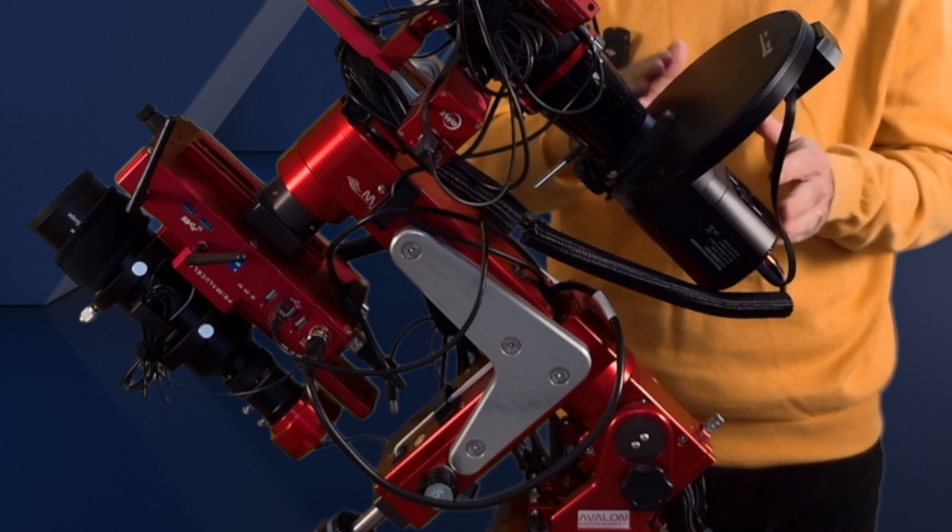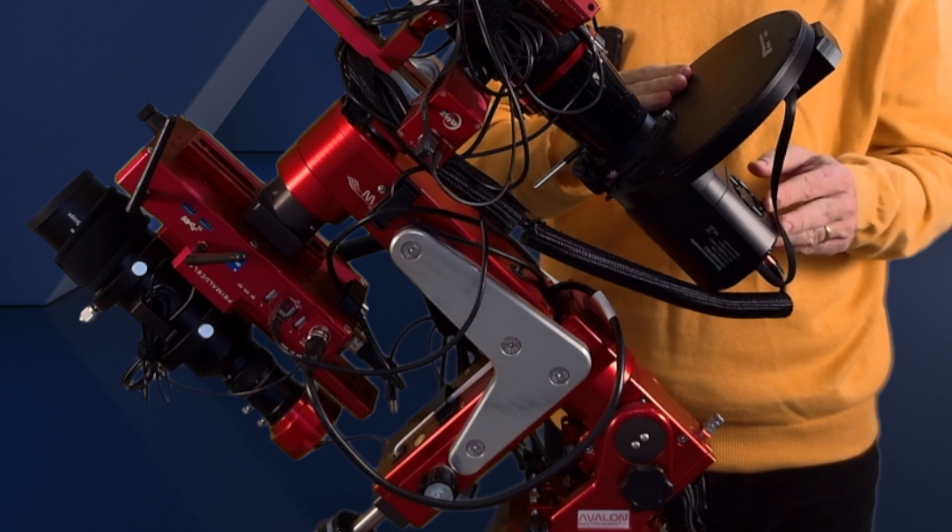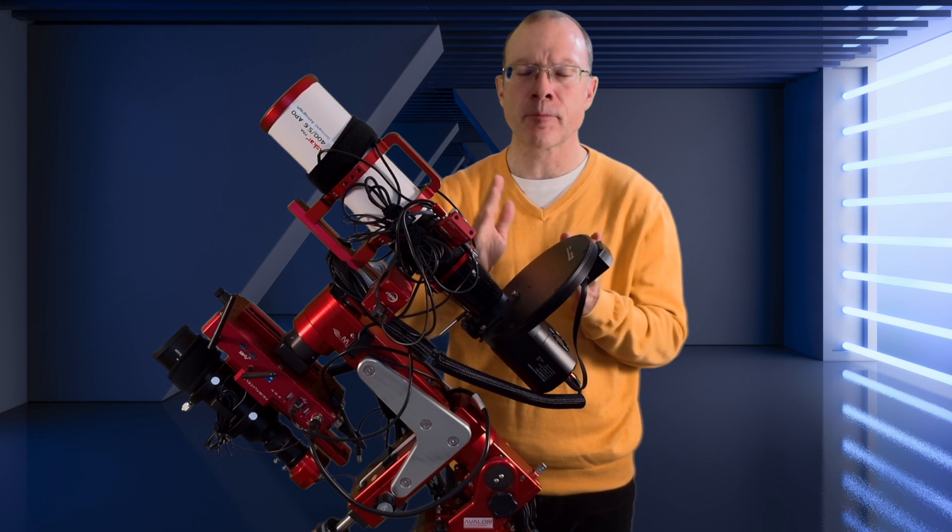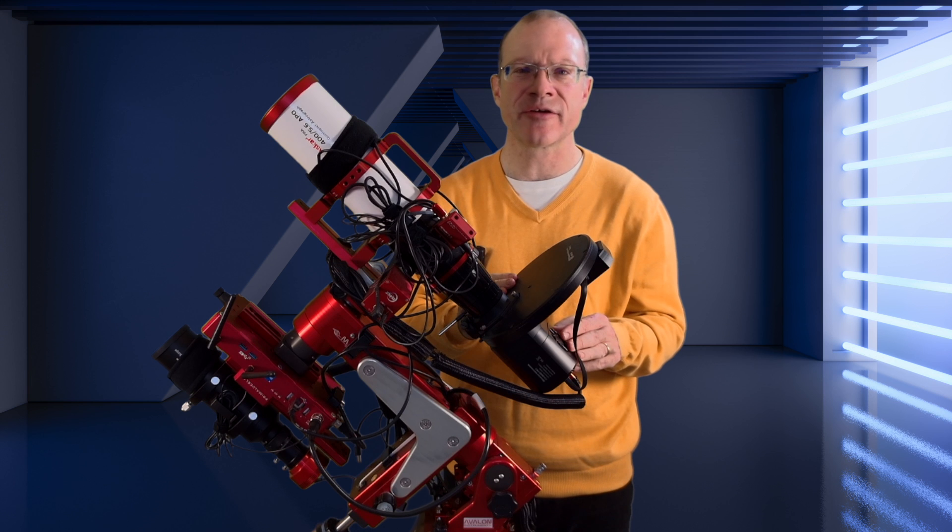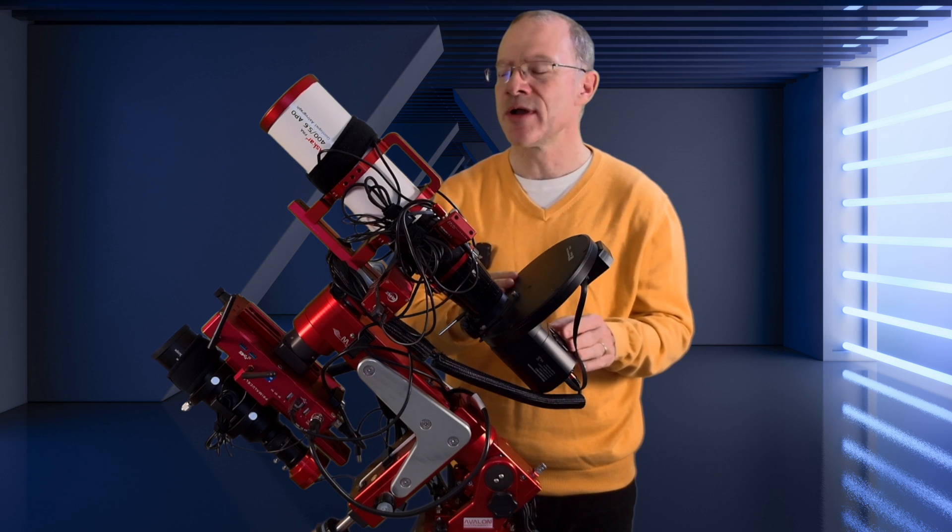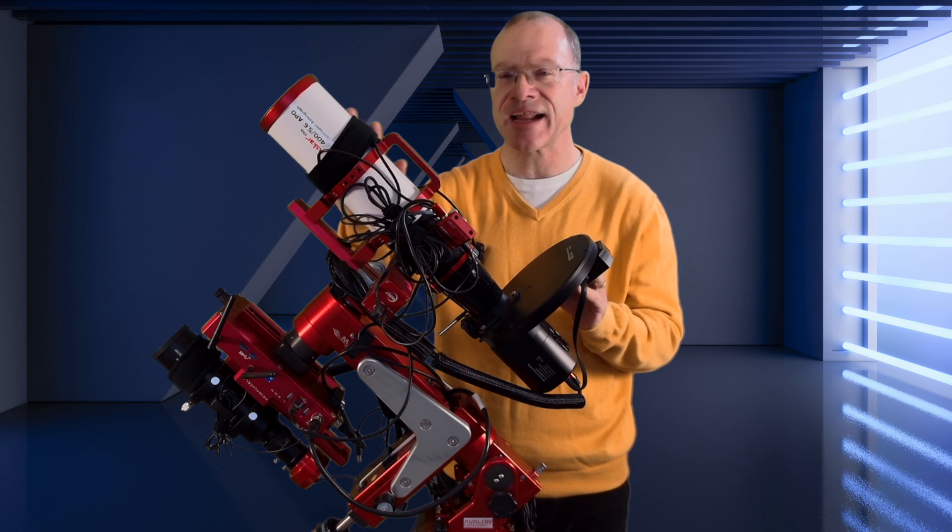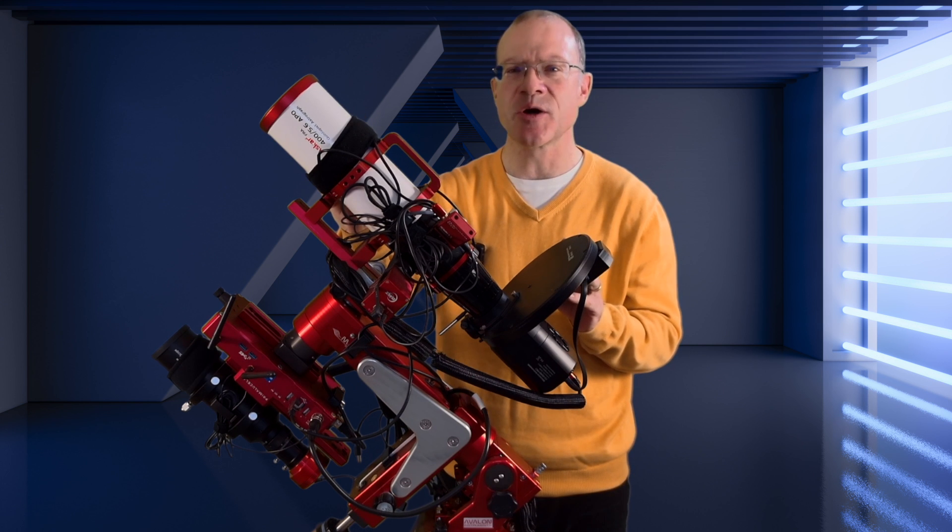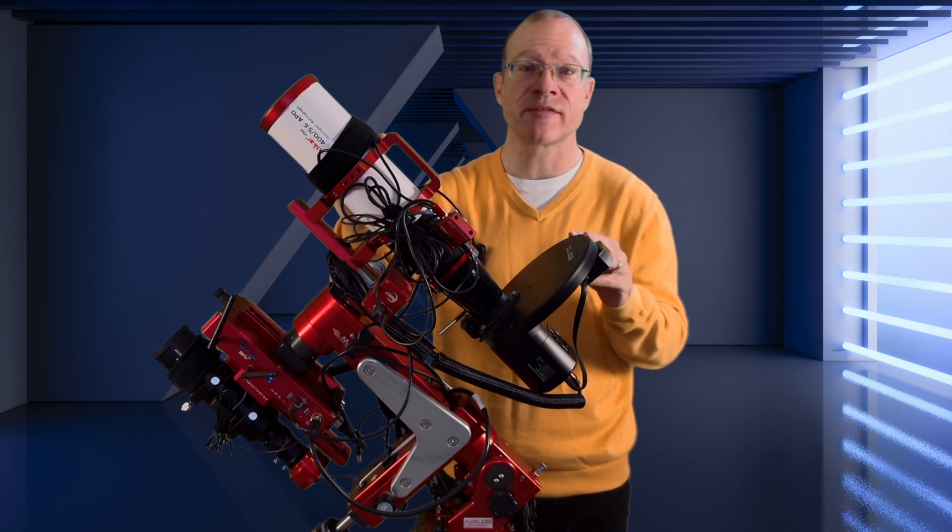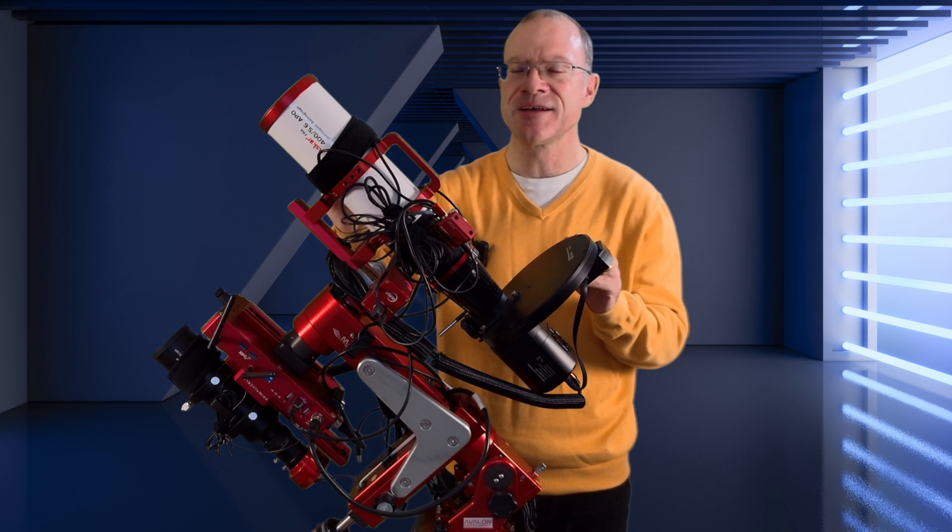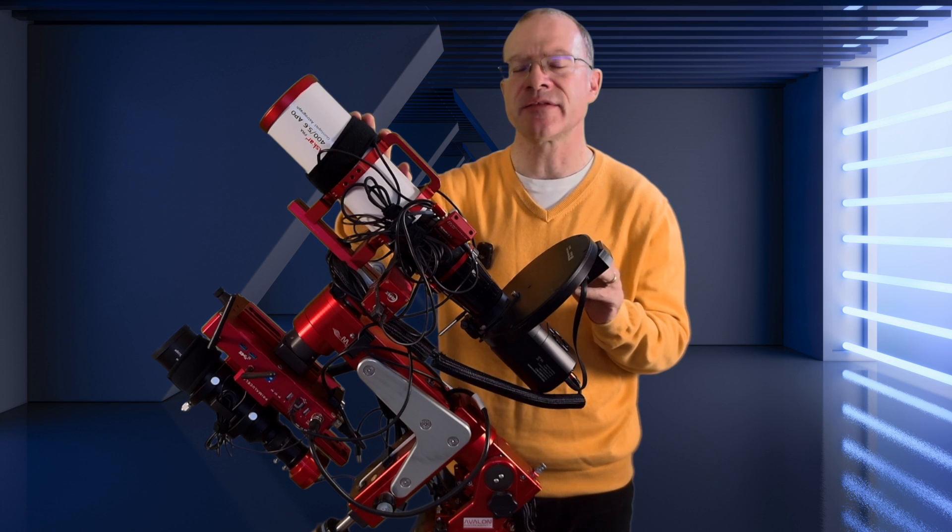I got a great camera with a Moravian C1-X 2600. I got a perfect filter with the Antlia 2.8nm narrowband filters. So everything around this scope changed.